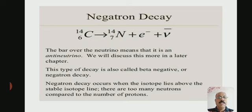This type of decay is also called beta negative or negatron decay. Negatron decay occurs when the isotope lies above the stable isotope line—there are too many neutrons compared to the number of protons.